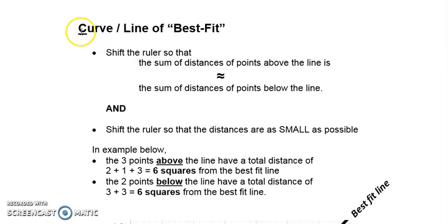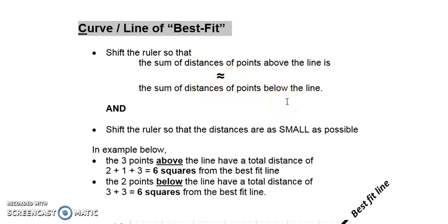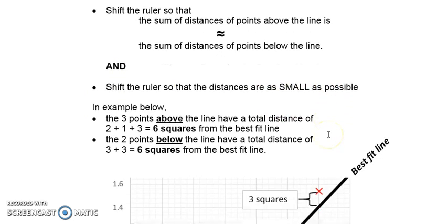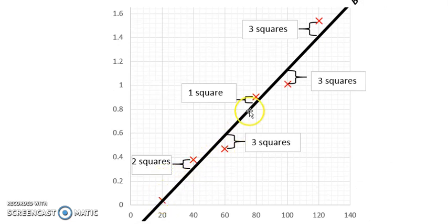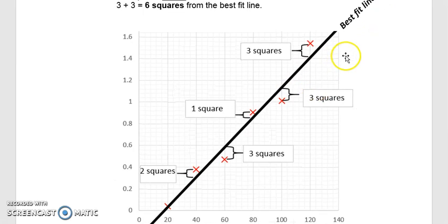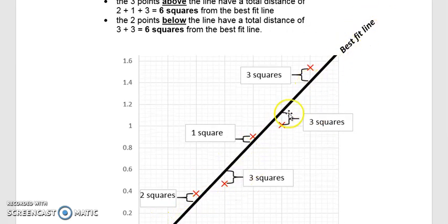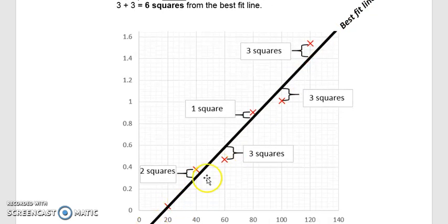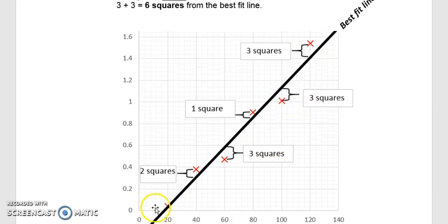C stands for Curve — or best fit line or curve of best fit. There are two criteria. First, shift your ruler so that the sum of distances above the line is approximately equal to the sum of distances below the line. Second, shift the ruler so the distances are as small as possible. For example, here I can see three points above the line and two points below, with one point on the line.